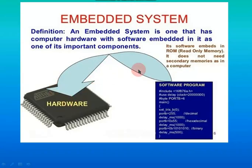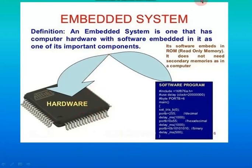To summarize the previous point: an embedded system is a combination of hardware and software. A physical structure is available for the embedded system — this is called hardware, referring to the physical peripherals of a system. Any code or program written is embedded into this hardware, making it an embedded system. I hope with this picture you are clear about what is meant by 'embedded system is a combination of hardware and software.'